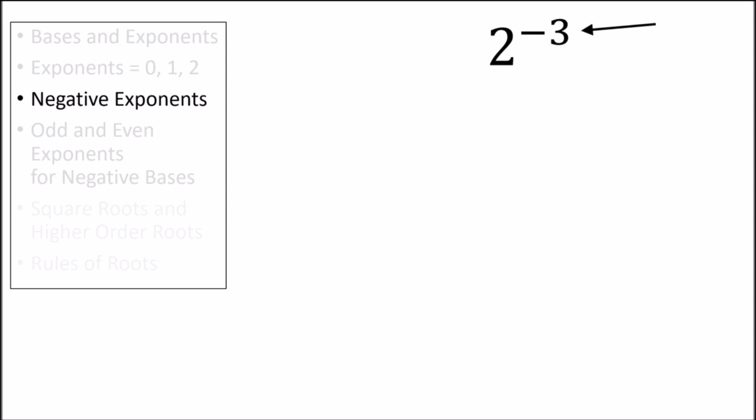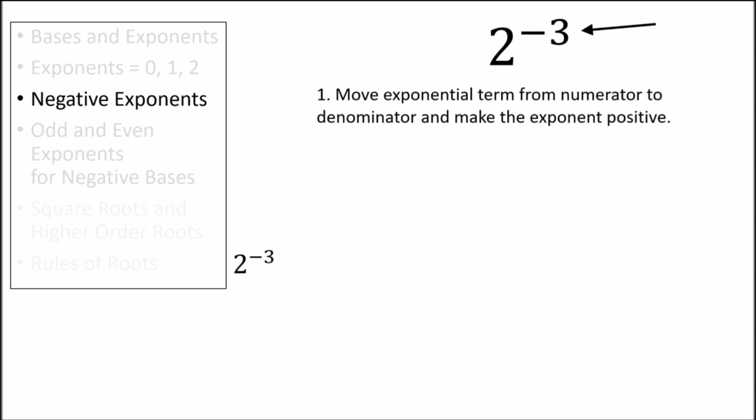The negative exponent rule can be applied in one of two ways. First, we can use it to move numbers from the numerator to the denominator of a fraction. For example, let's try to simplify 2 to the power of negative 3. Applying the negative exponent rule, we can move the exponential term from the numerator to the denominator and change the exponent to positive. So 2 to the negative 3 has the same value as 1 eighth. We can also do the reverse, using the negative exponent rule to move exponents from the denominator to the numerator. For example, let's simplify 1 divided by 2 to the power of negative 3. Applying the rule, we can move the exponential term from the denominator to the numerator and change the exponent to positive, so 1 divided by 2 to the negative 3 has the same value as 8.